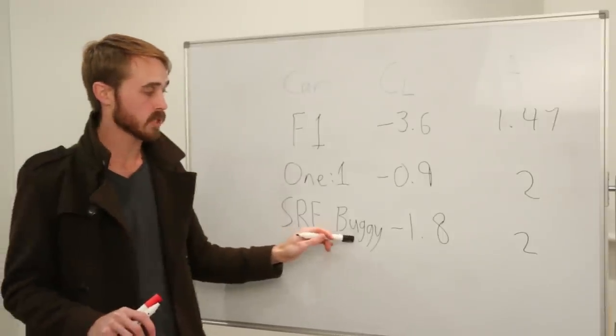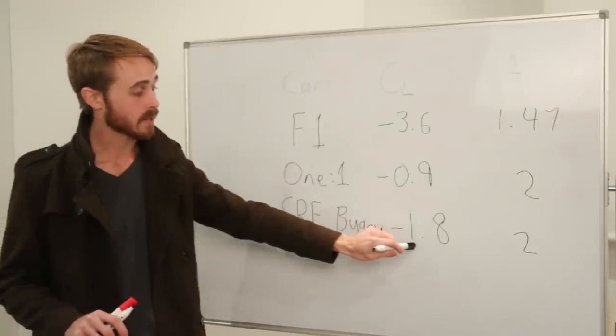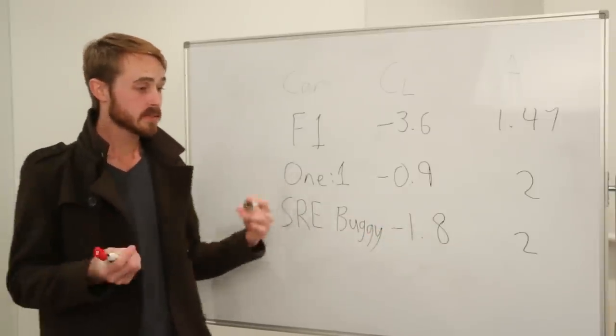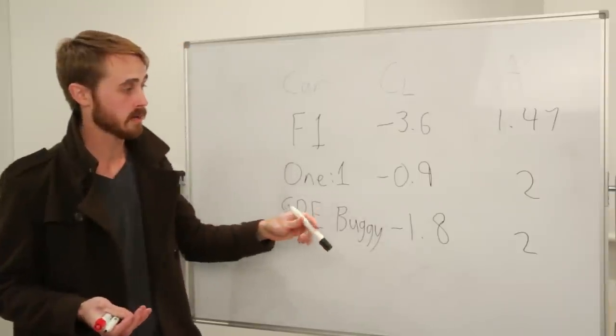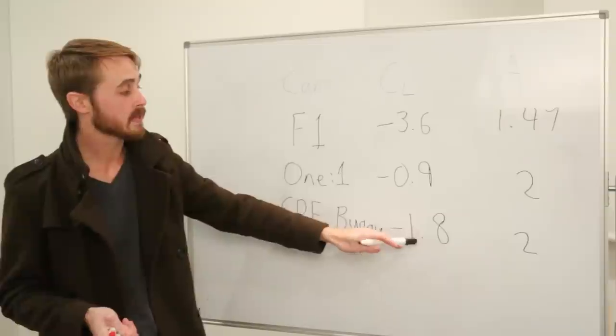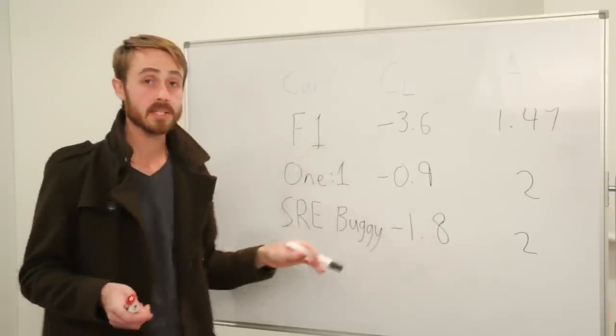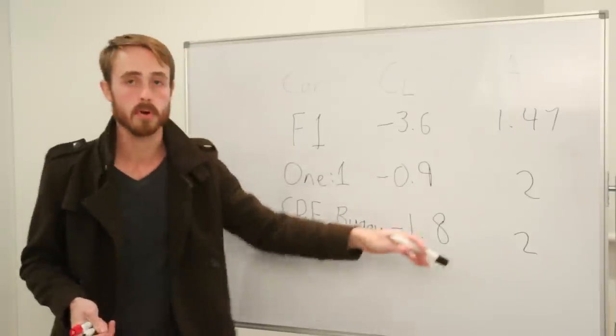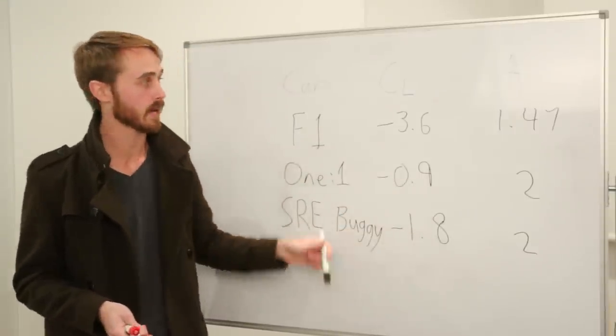Something like the Shadow Race Engineering buggy has a downforce coefficient of negative 1.8 which is decently high given it doesn't have much ground effect, but it has a frontal area of 2 and this means that its downforce is actually around 80% that of a Formula One car. It's not that it's more efficient, it's that it's just using brute force with more area.